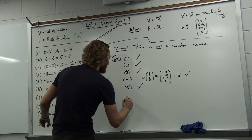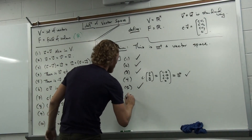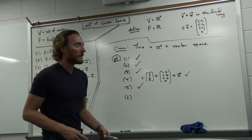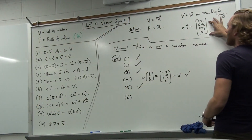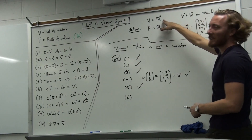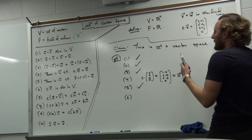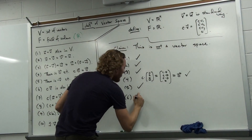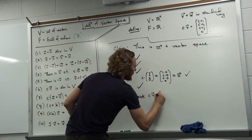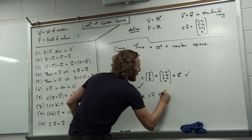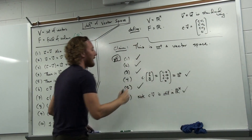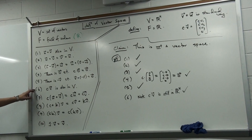What about stipulation six — is a constant times a vector still a vector? Yes, because a constant times a vector gives c times each component, and the result is still a vector in R4. It happens to have a fourth component of zero, but c times an R4 vector is still in R4. So we pass stipulation six.